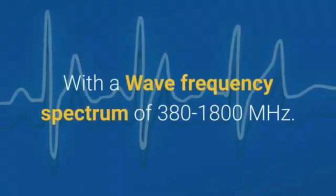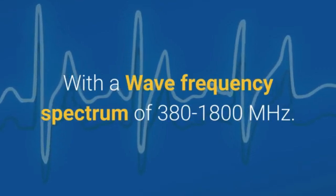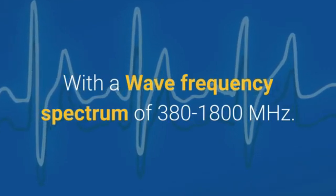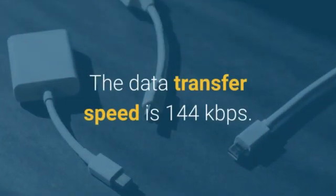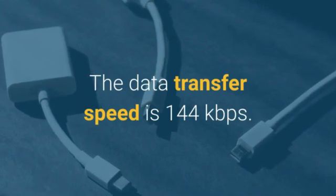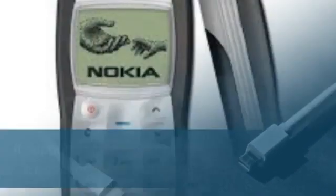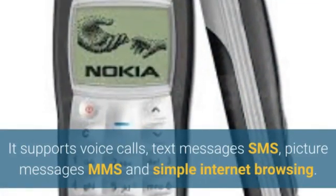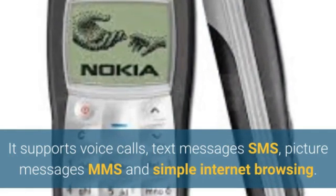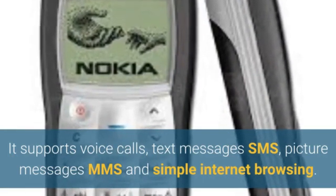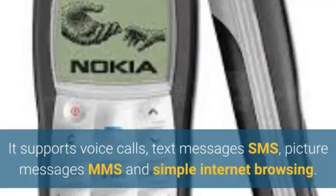The second generation was launched in 1990 in Finland, with a wave frequency spectrum of 380 to 1800 megahertz. The data transfer speed is 144 kilobits per second. It supports voice calls, text messages (SMS), picture messages (MMS), and simple internet browsing.